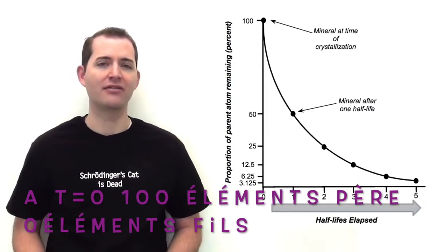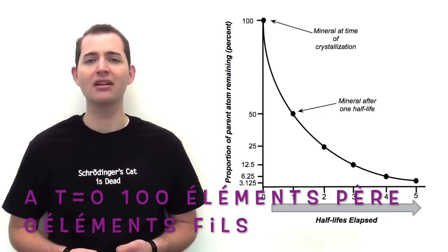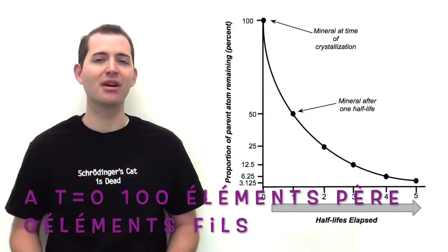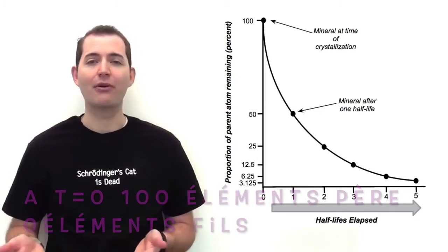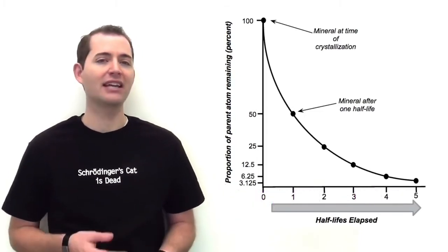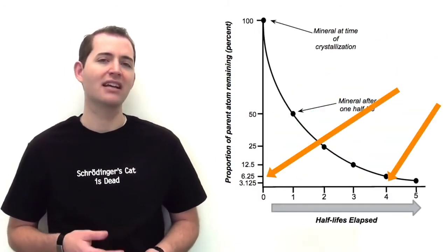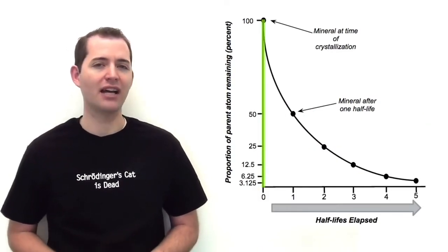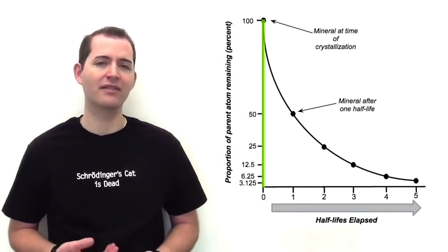Let's look a little more at this term half-life. We can understand it better if we look at a graph. On the vertical axis, we have the percentage of parent atoms remaining in that rock sample, from 100% down to 0%. On the horizontal axis, we have the number of half-lives. At 0 half-lives, or at the moment of formation of that rock, we would have 100% of the parent atoms.